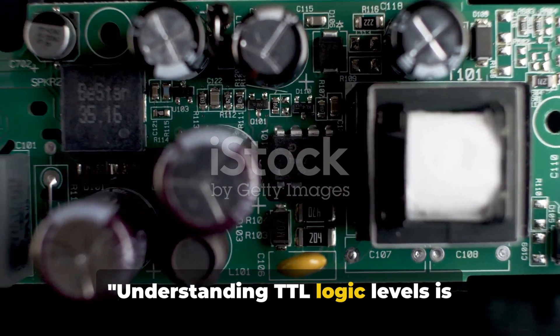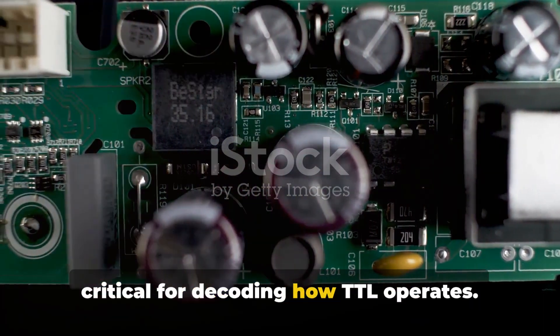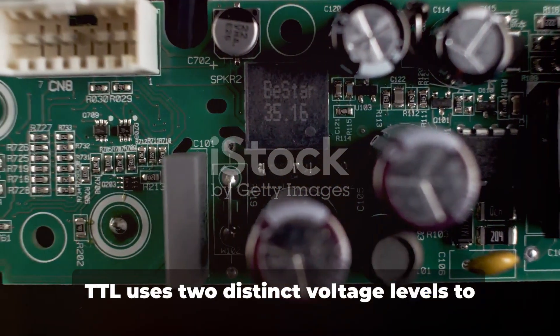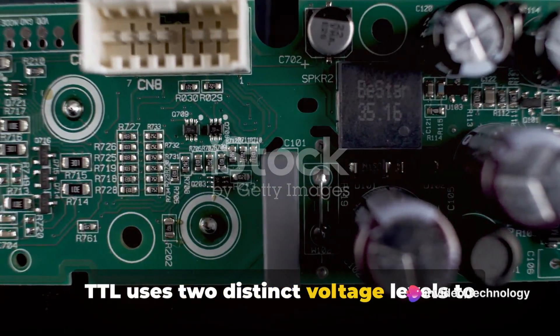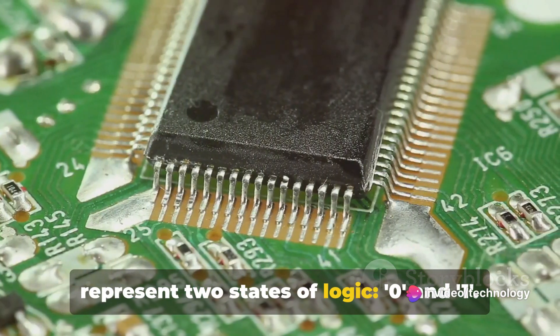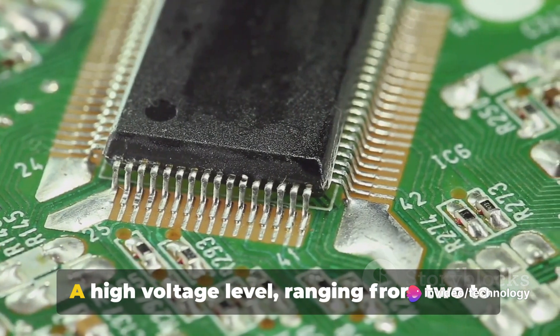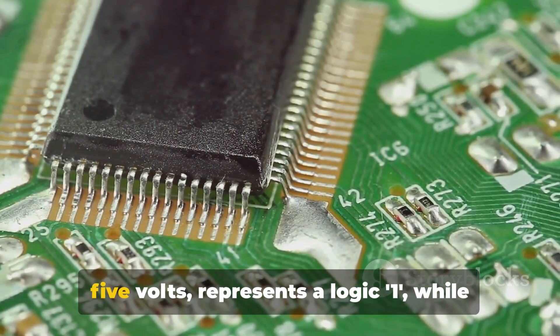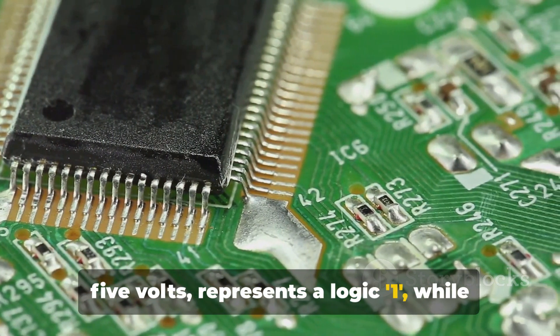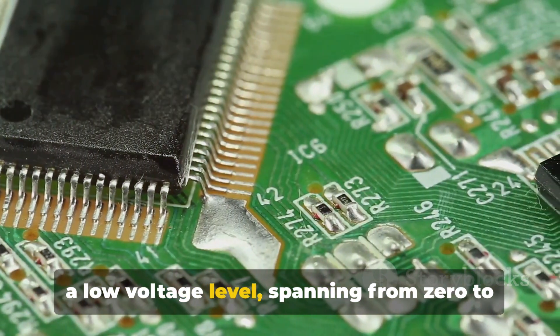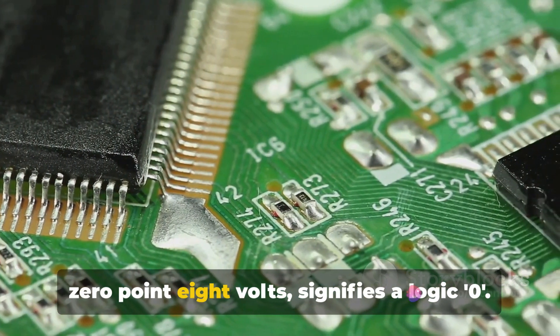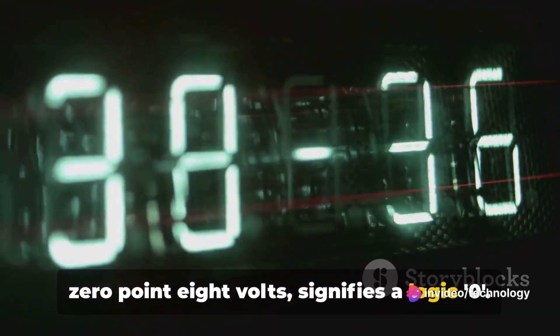Understanding TTL logic levels is critical for decoding how TTL operates. TTL uses two distinct voltage levels to represent two states of logic, zero and one. A high voltage level, ranging from two to five volts, represents a logic one. While a low voltage level, spanning from zero to 0.8 volts, signifies a logic zero.